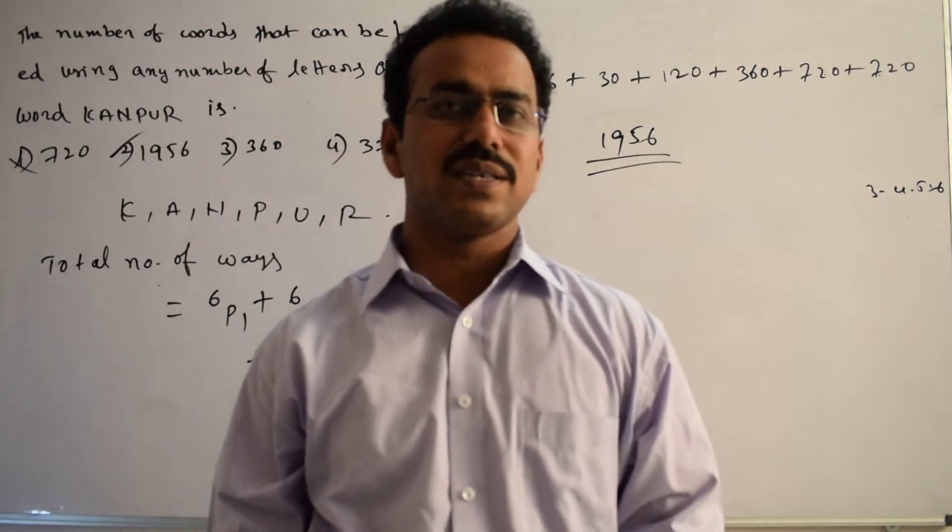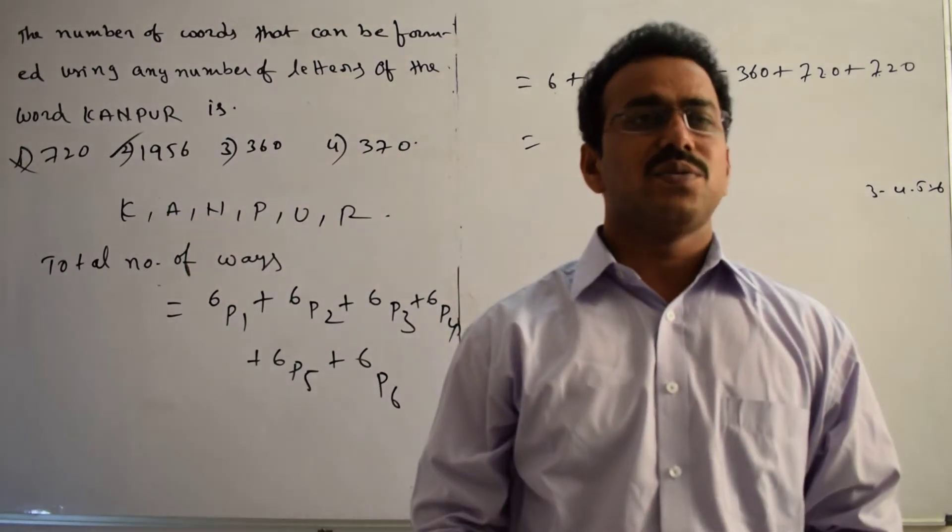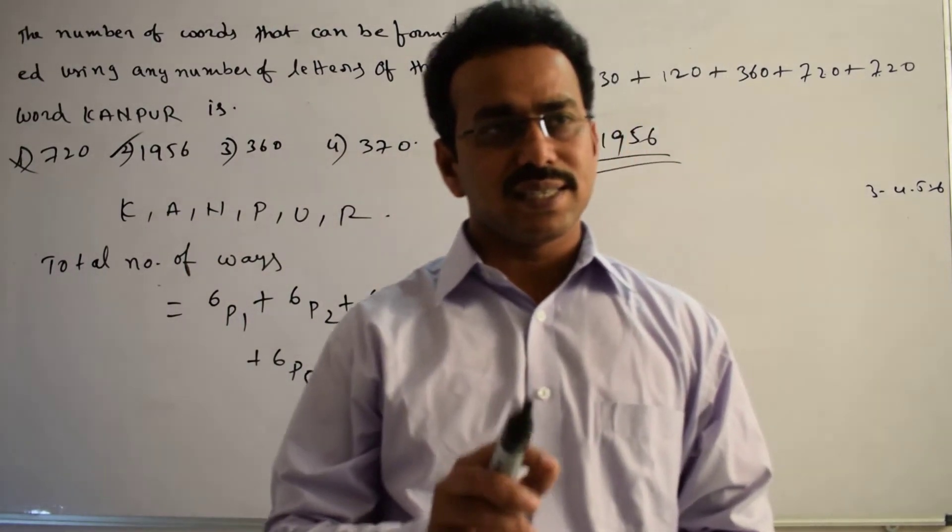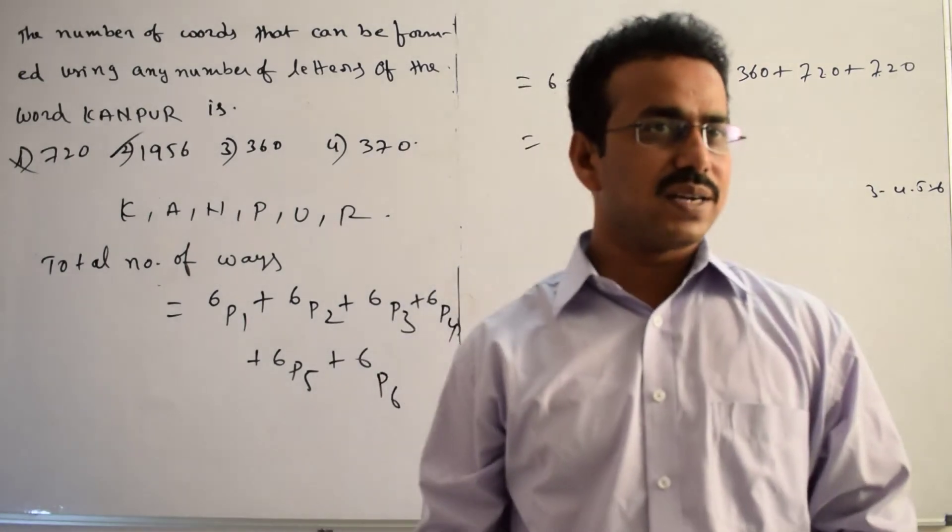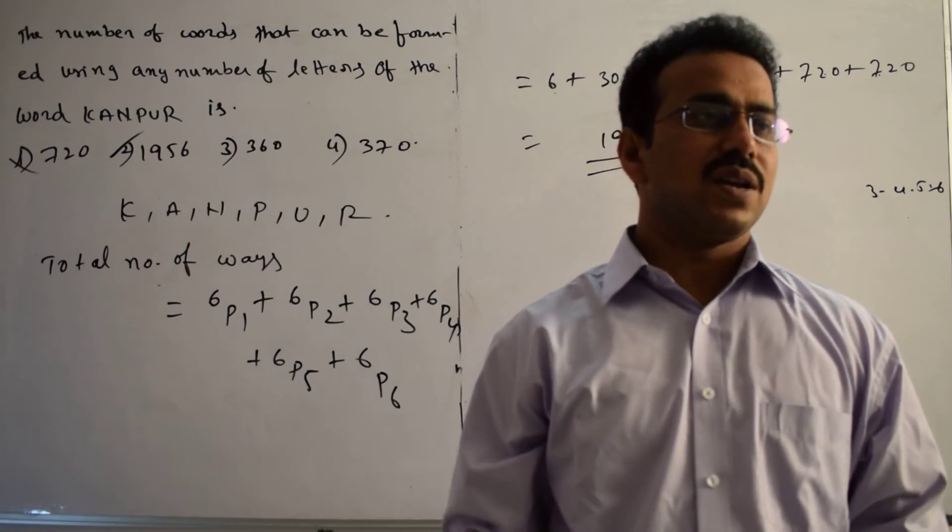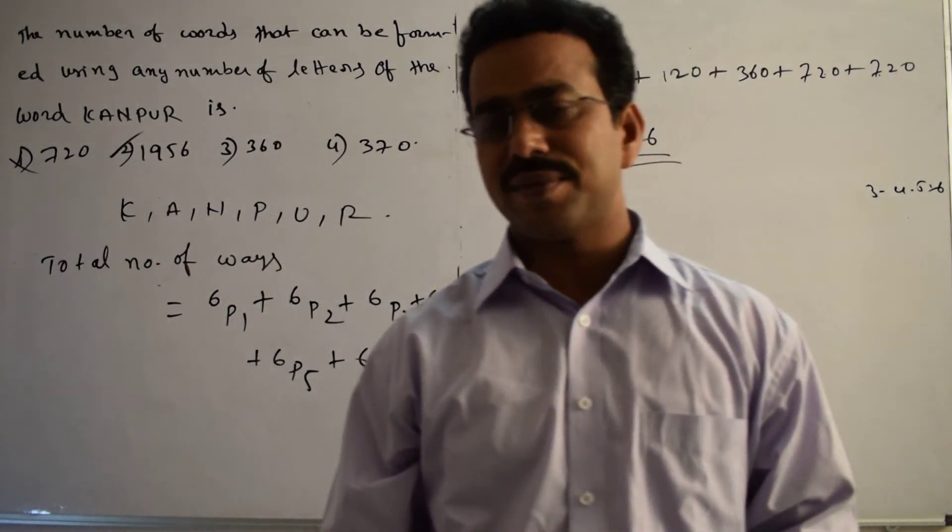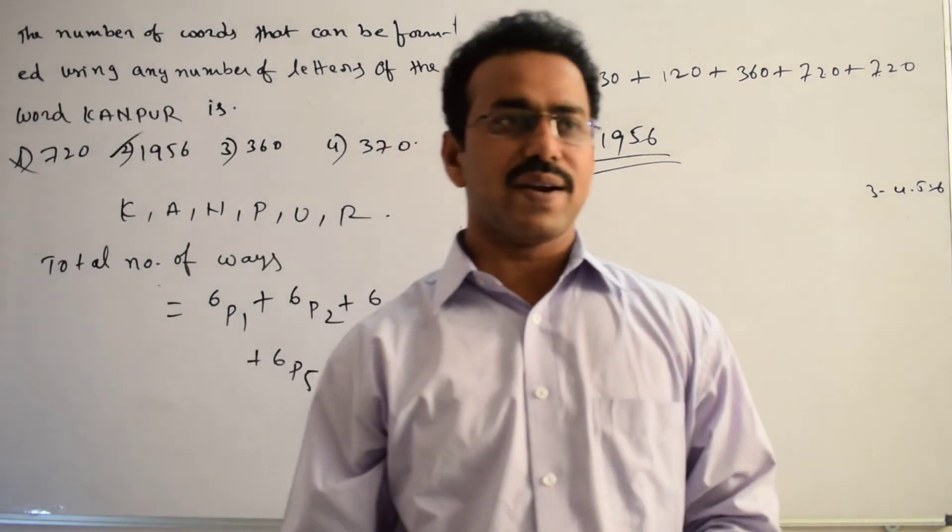So these are the required number of ways. So what is the simple logic we followed here? This is very simple question. Simply, we calculated the total number of words which contain a single letter. Similarly, the 2 letter words, 3 letter words, 4 letter words, 5 letter words, up to 6 letter words. Now, we added all this number of ways. Finally, we got 1956 ways. This is the required result.